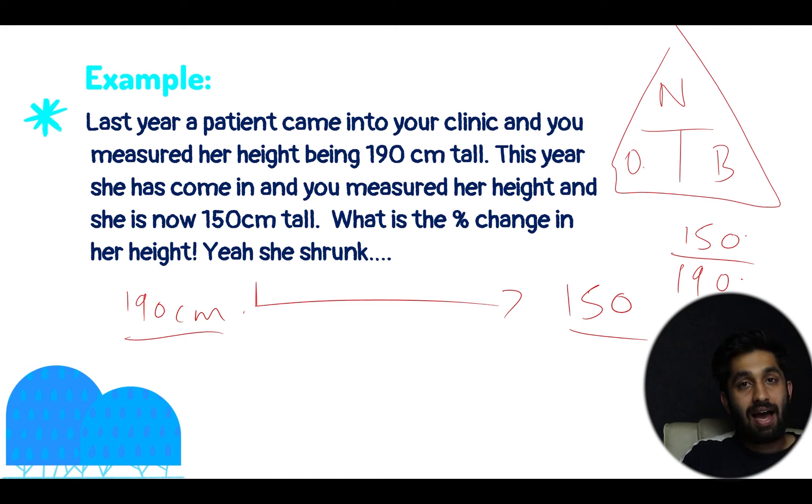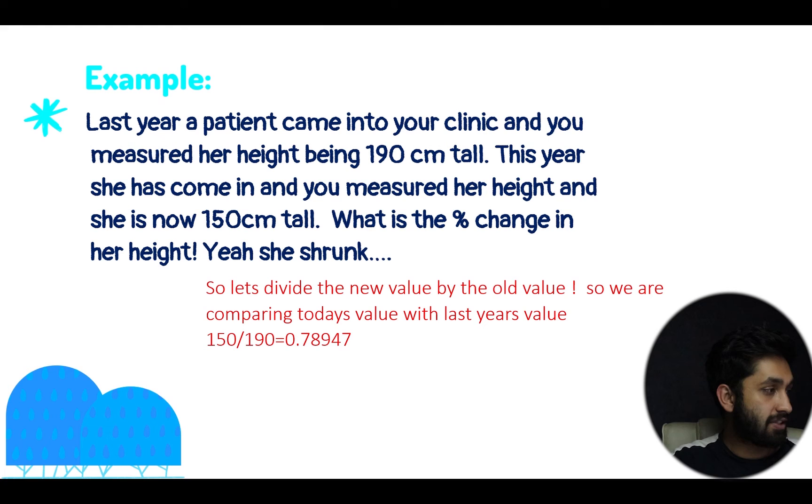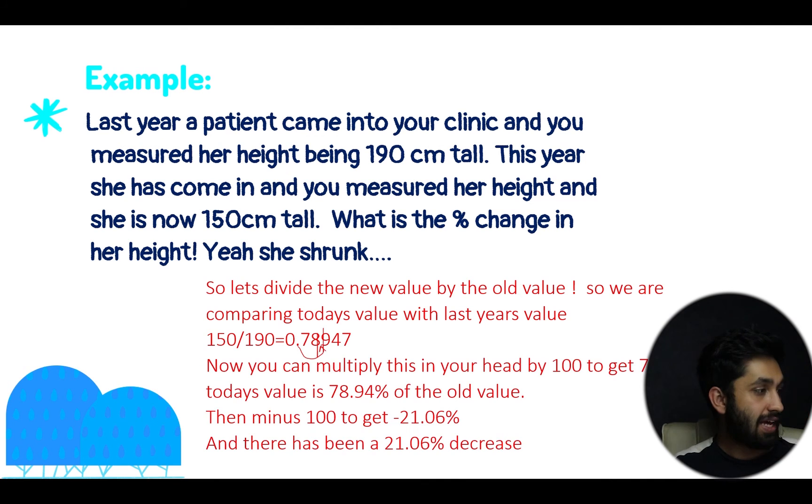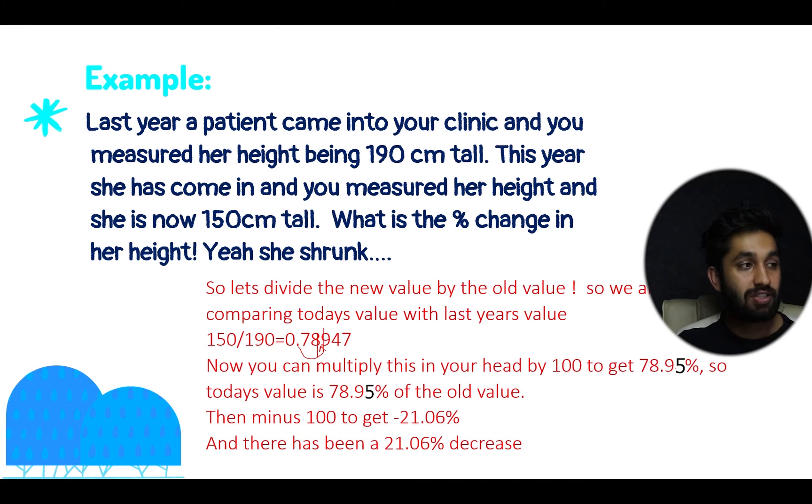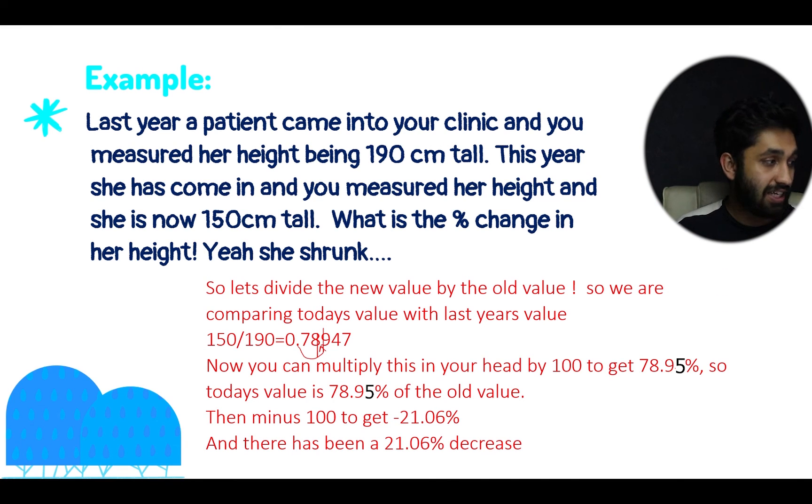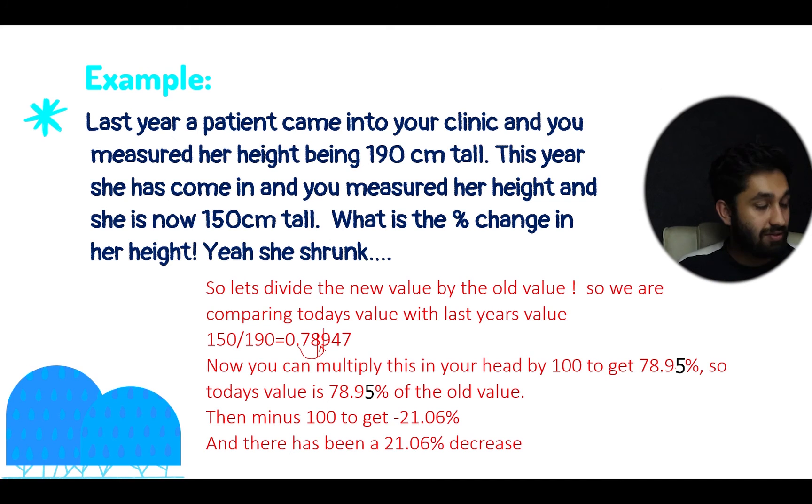So let's do that. Doing that gives us 0.78947, and we can multiply this by 100 in our head, so no need to do this on the calculator. This is literally just taking the decimal place and moving it right here. So then you multiply this by 100 to get 78.94%. Today's value is 78.94% of the old value. Then you minus 100, like I said before, to get -21.06%, and that is the percentage change. There's a 21.06% decrease.